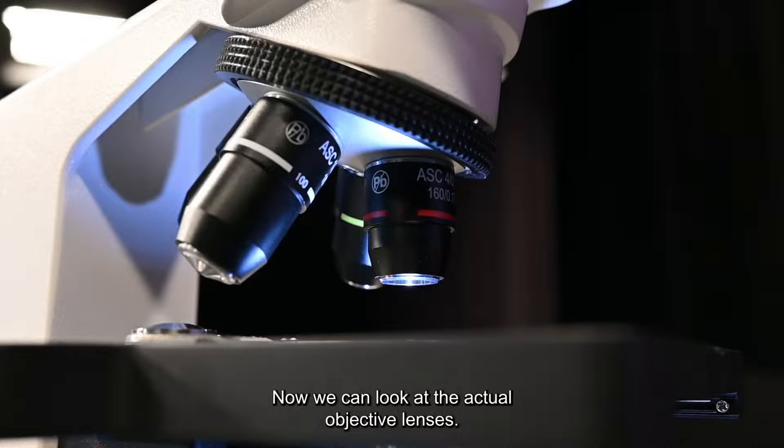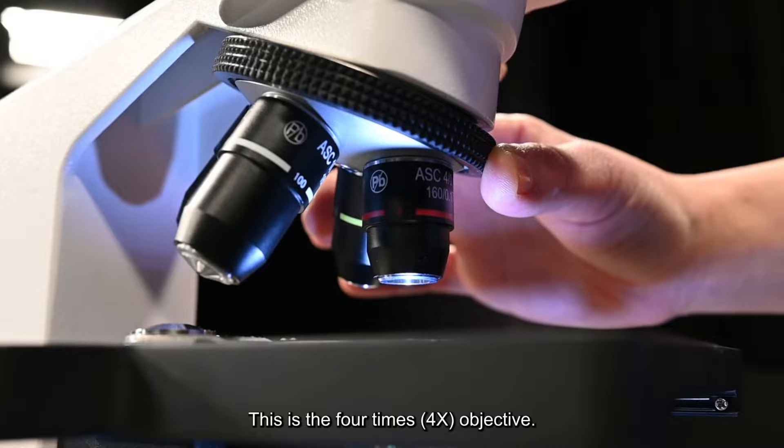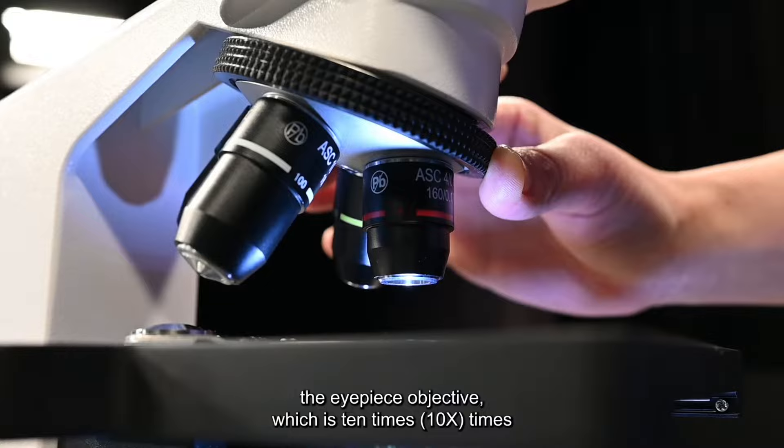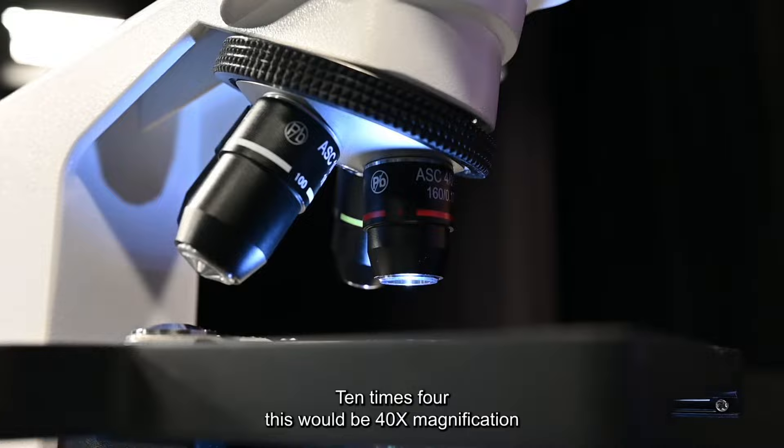Now we can look at the actual objective lenses. The one that I have right here is the shortest one. This is the four times objective. When we're looking at total magnification we're going to take the eyepiece objective which is ten times, times this right here, ten times four. This would be forty times magnification.